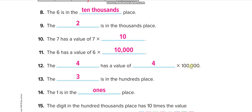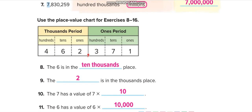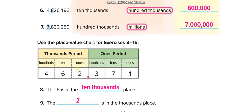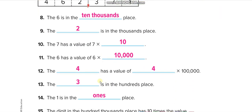The blank has a value of six times one hundred thousand. One stands: hundred thousand, ten thousand, hundred thousand. So the number is eight hundred thousand. Four has a value of four times one hundred thousand. The blank is in the hundreds place — here it is — and three is in the hundreds place.